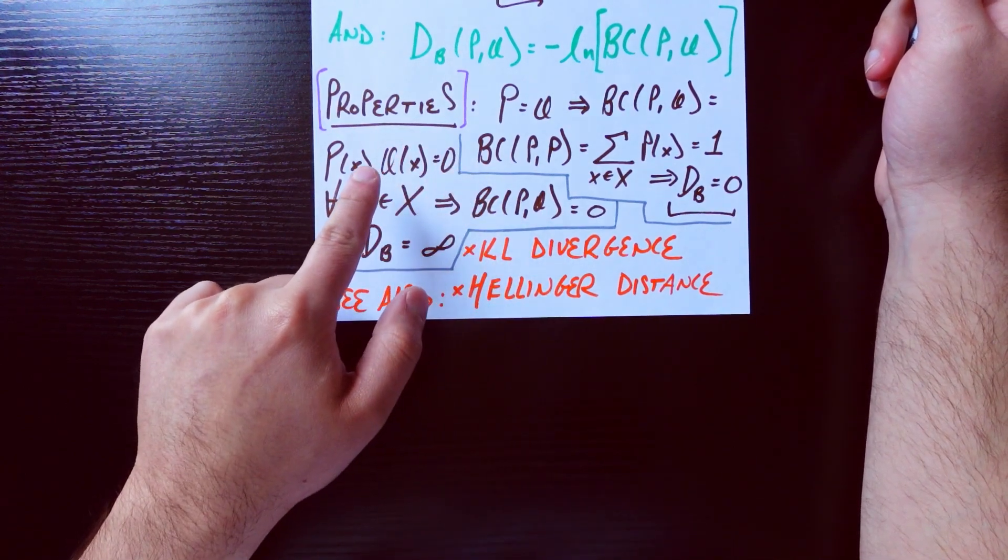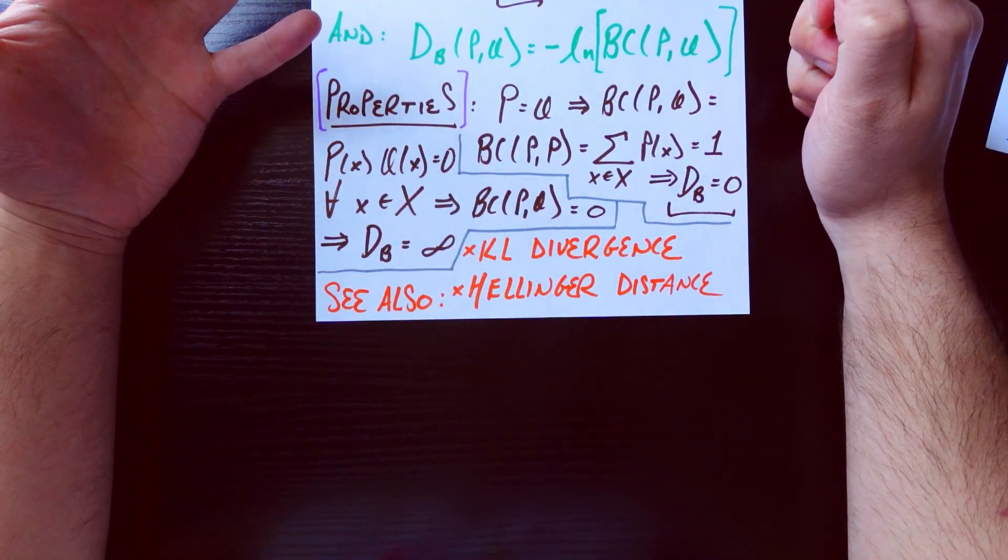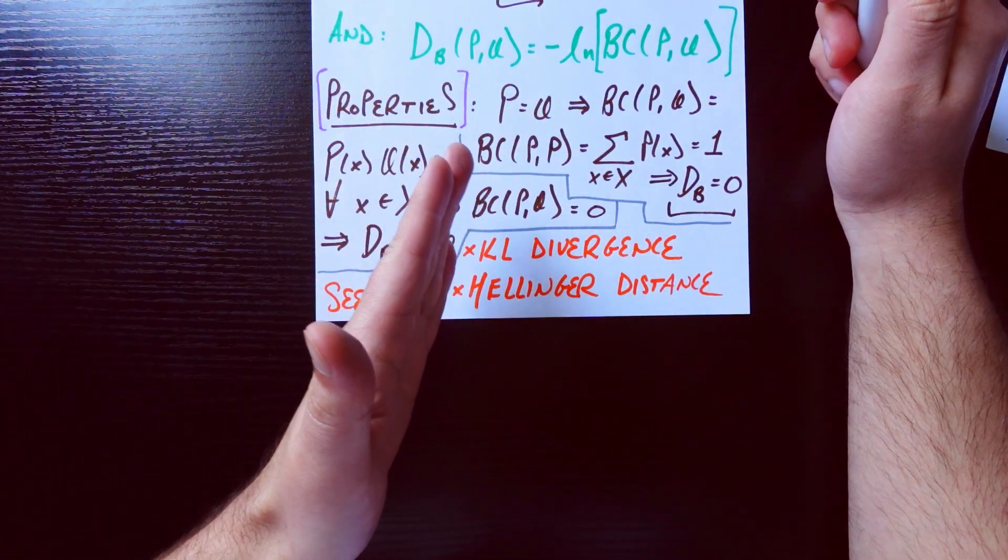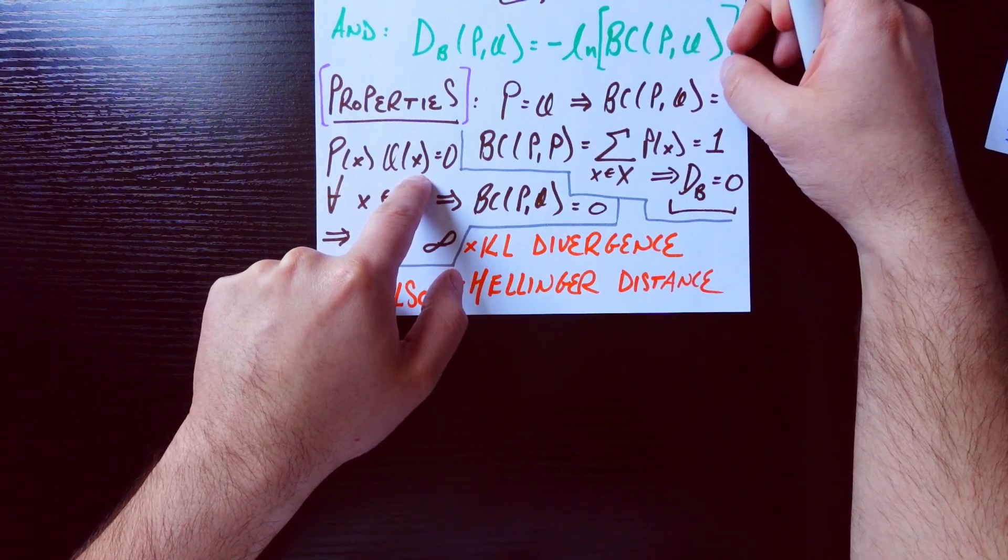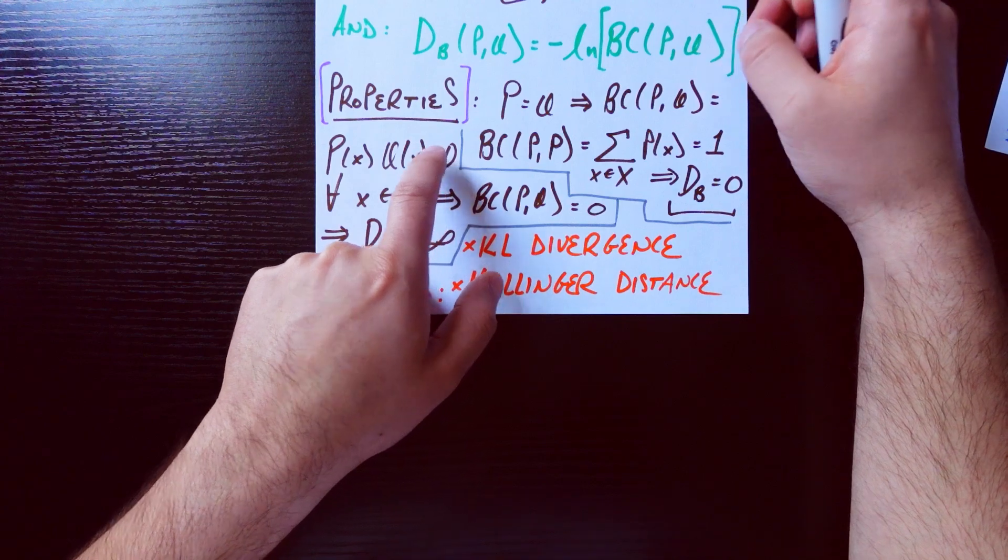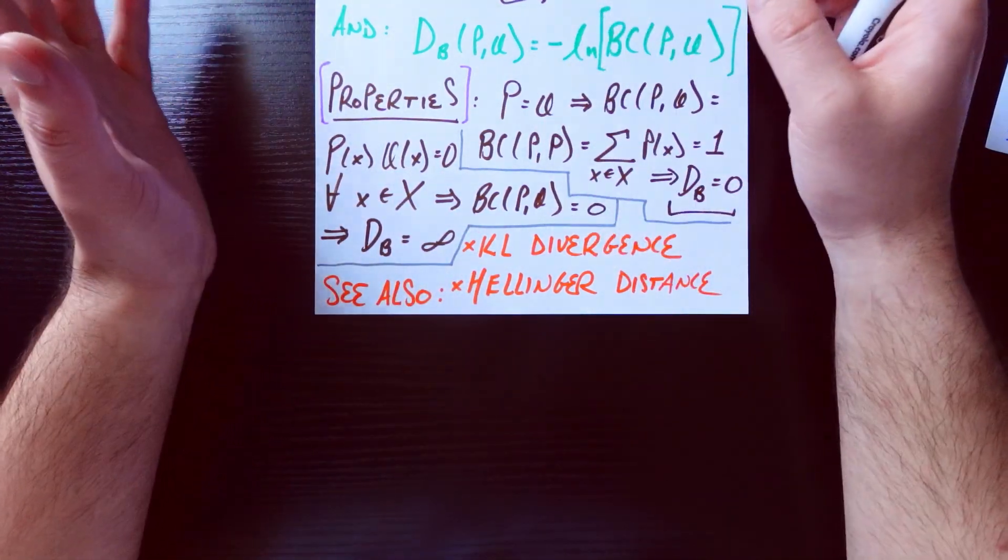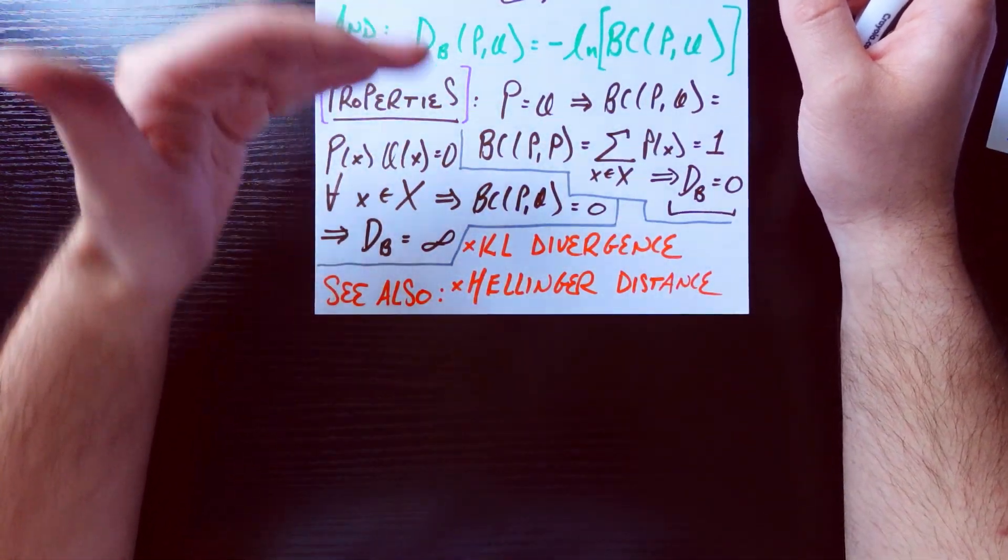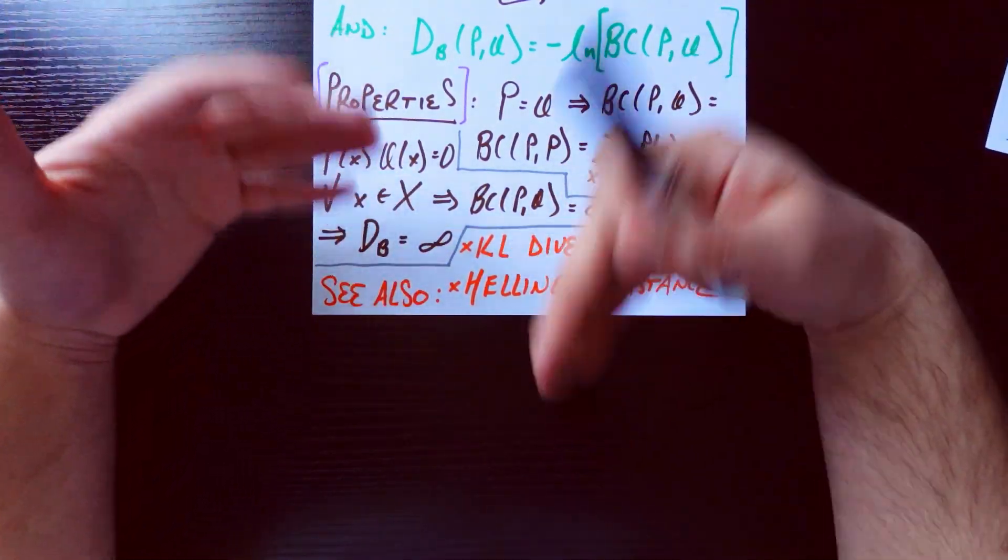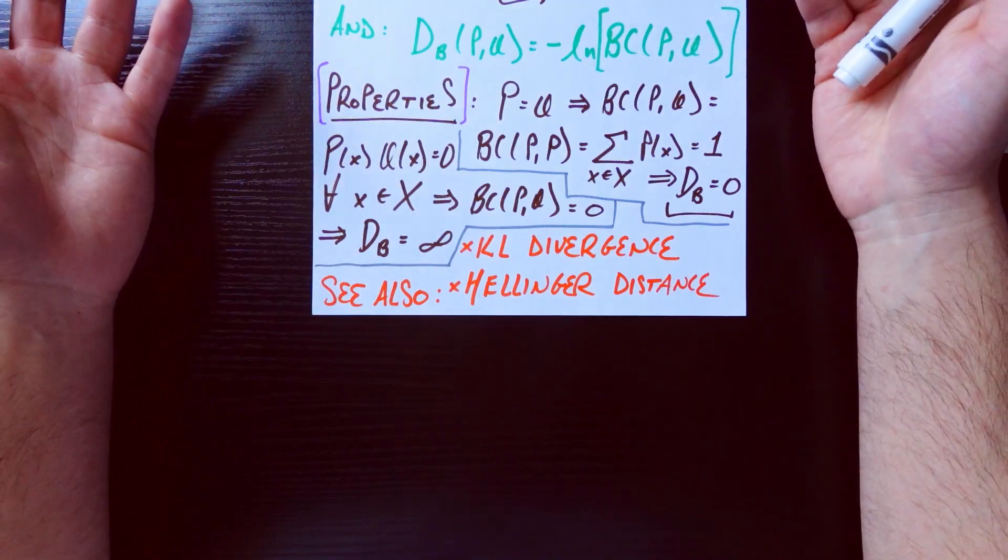Let's talk about the opposite extreme case. What if P(x) times Q(x) is equal to 0 for all x in this domain? What that means basically is that at every point in the domain x, either P or Q or both is going to be 0, which is going to cause this product to be 0. That means that these distributions don't agree anywhere. If one is positive somewhere, the other is 0. If that other one is positive somewhere, the original one is 0. So they don't agree anywhere. This is kind of worst case scenario, and we would expect our metric to kind of reflect that.